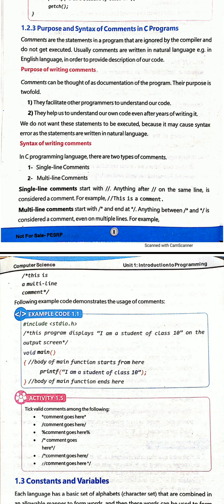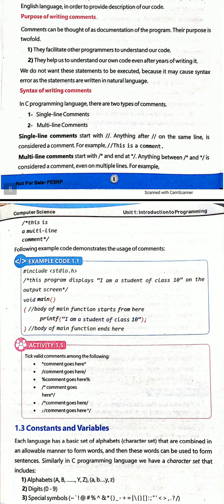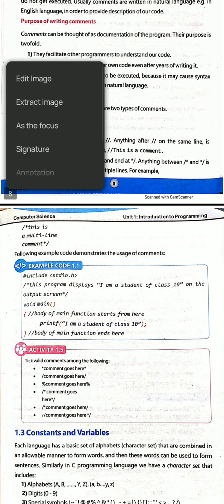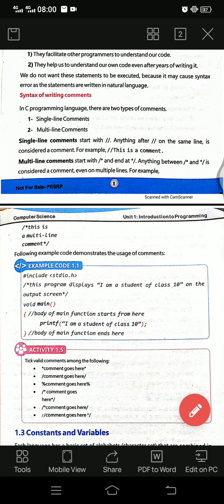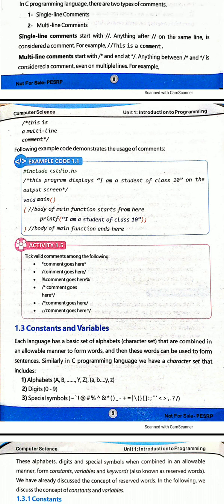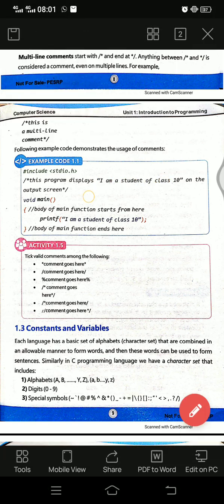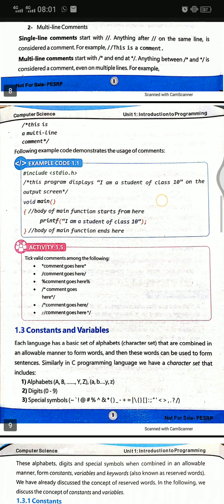For multi-line comments, the syntax is: slash-star to open and star-slash to close. When we comment more than one line, we write the comment between these two symbols. As you can see here, this is a multi-line comment because it is written across 3 lines. If the same words were in one line, we would simply use double slash. And for the single-line comment shown below — 'body of main function' — you can see the double slash applied.